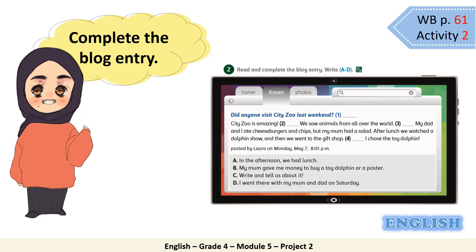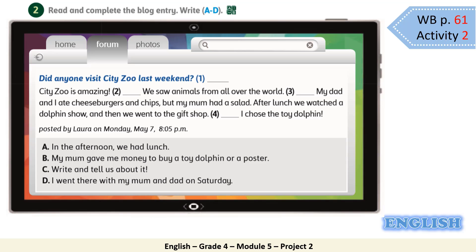Please refer to workbook page 61, Activity 2. It's time to complete the blog entry. Read and complete the blog entry — write from A to D. We are going to fill in the gaps with A, B, C, or D. But before we start reading the blog, let's read the options at the bottom. A: 'In the afternoon, we had lunch.' B: 'My mom gave me money to buy a toy dolphin or a poster.' C: 'Write and tell us about it.' D: 'I went there with my mom and dad on Saturday.'